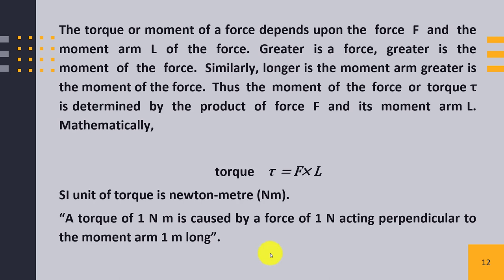To summarize: torque is the turning effect of a force and is also called moment of force. It is produced by applying some force, and the line along which that force is applied is called the line of action of the force. The fixed point or axis around which an object turns is the axis of rotation. Torque depends on two factors: force and moment arm. Its formula is τ = F × L, its unit is Newton meter, and one Newton meter has been defined. Our torque or moment of force topic is now complete.